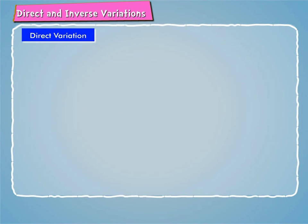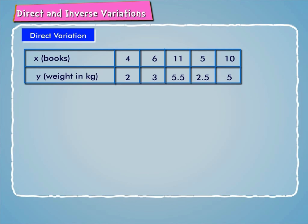Direct variation. Let us consider an example. Look at the table given on screen. Suppose x is the number of books and y is their weight.